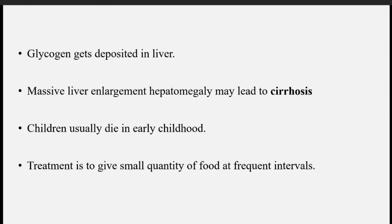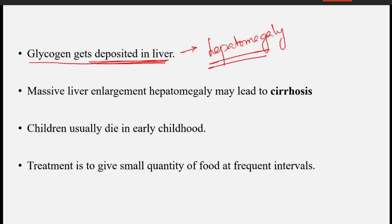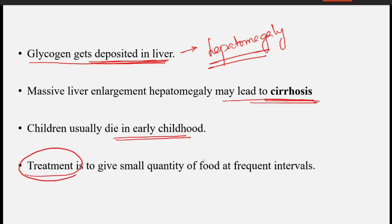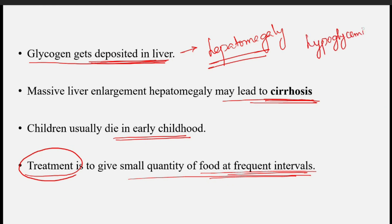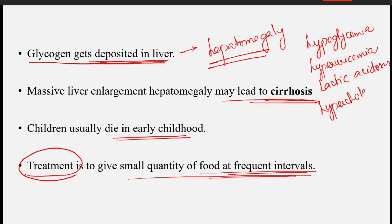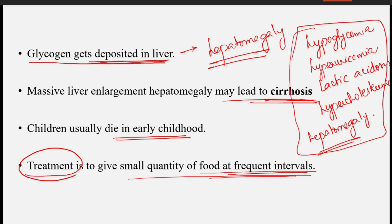Glycogen gets deposited in the liver and does not get degraded due to the absence of the enzyme, ultimately causing hepatomegaly. The massive enlargement of the liver is due to excessive deposition of glycogen in the liver, which may ultimately lead to cirrhosis. Children usually die in early childhood. Treatment for Von Gierke's disease is to give small quantities of food at frequent intervals. This is how a clinical question on Von Gierke's disease can be answered, explaining the biochemical basis of hypoglycemia, hyperuricemia, lactic acidosis, hypercholesterolemia, and hepatomegaly.